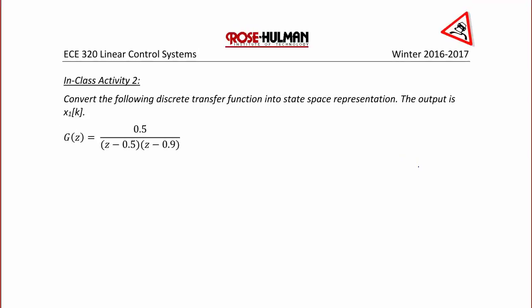In-class activity 2: convert the following discrete time transfer function into state-space representation where the output is x1 of k. The first thing we do is FOIL the denominator. So G of z is equal to 0.5 over (z minus 0.5) times (z minus 0.9).